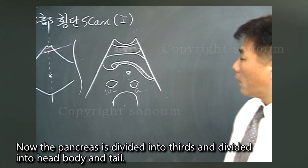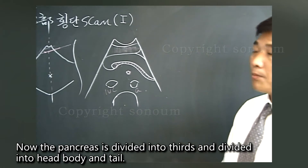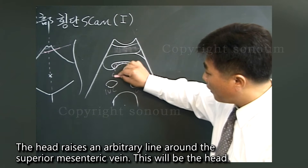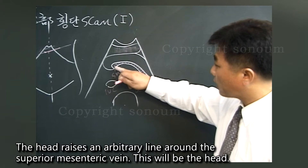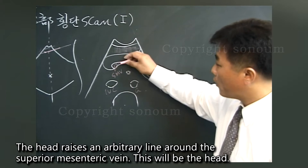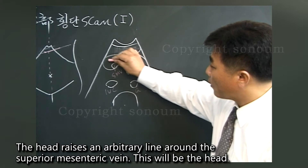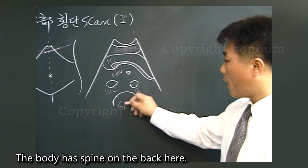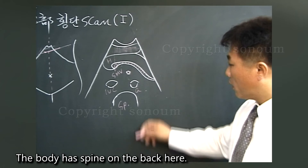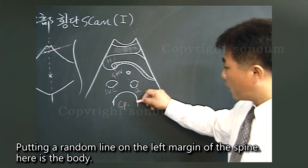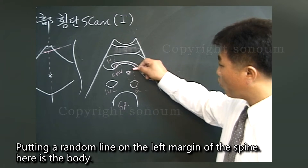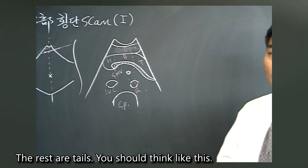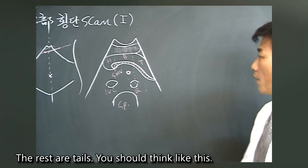The pancreas is divided into thirds: head, body, and tail. The head is defined by drawing an arbitrary line around the superior mesenteric vein. The body has the spine at the back, and putting a random line on the left margin of the spine marks the body. The rest is the tail.